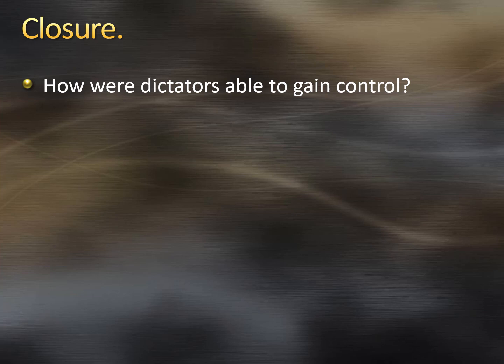Our closure question: how were dictators able to gain control? Think about how Hitler and Mussolini were able to gain control in their countries. What types of things did they do? What types of things did they say to pull people to their side and support them? That will help you with your questions today. Have a great rest of your day or night. Talk to you soon.